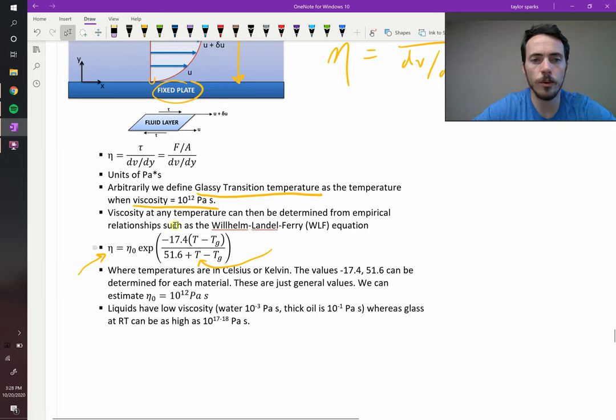Now, these constants, negative 17.4 and 51.6, those should be determined for each material. These ones here are sort of general values that work for some systems, but they won't work for everything. If you know the glassy transition of your material, you plug in your temperature, then you can figure out what your viscosity is at some other temperature. So this is a somewhat useful equation for estimating viscosity at different temperatures.